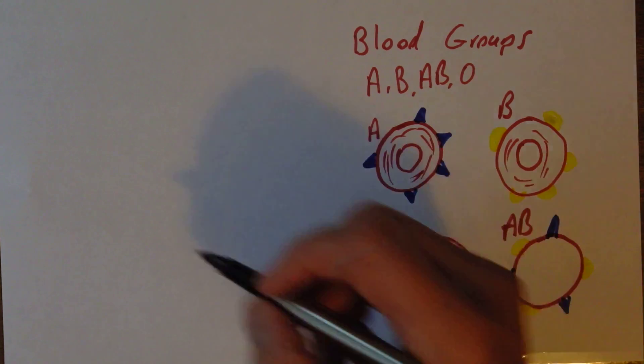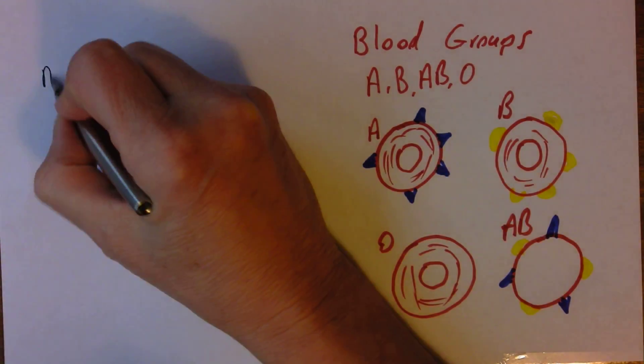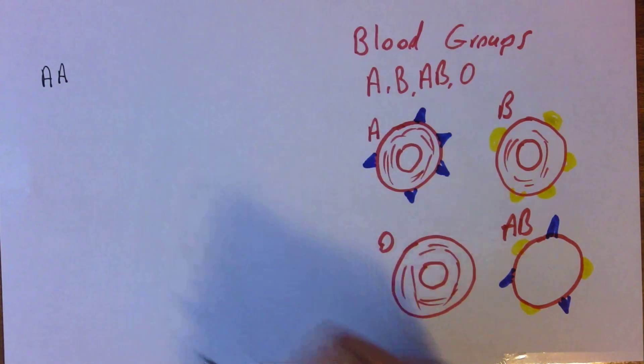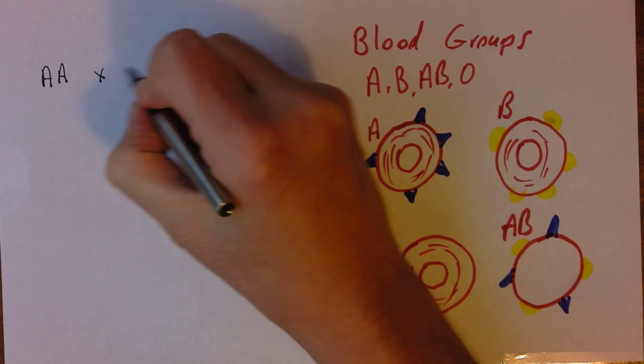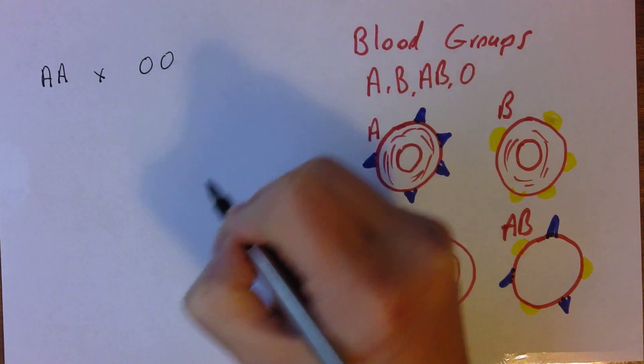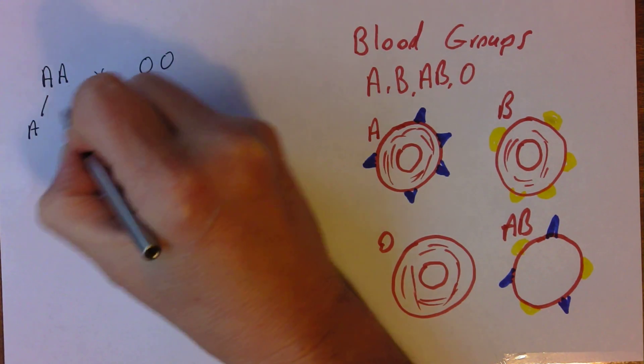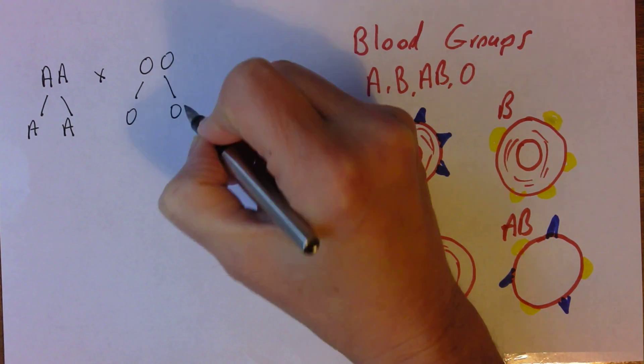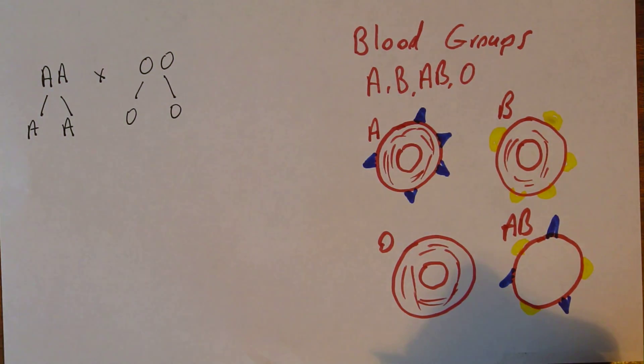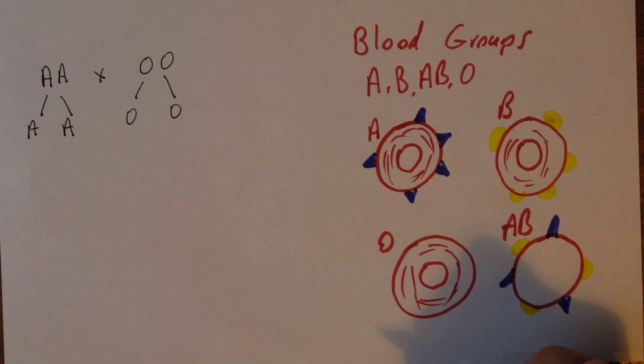So let's think of an example. Let's suppose we have someone who's blood group A, and let's suppose they are genotypically homozygous for the blood group, and they reproduce with someone who is blood group O. So they'll make gametes. And we notice that this is completely autosomal, a normal autosomal form of inheritance.